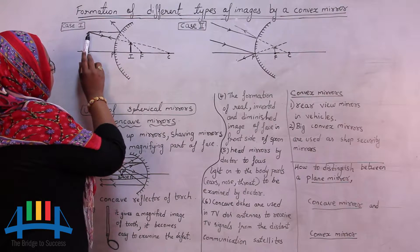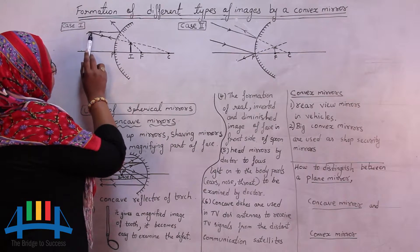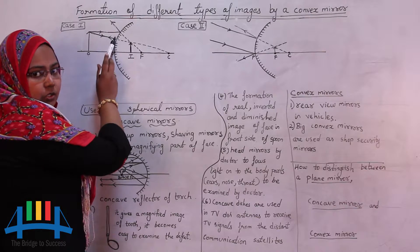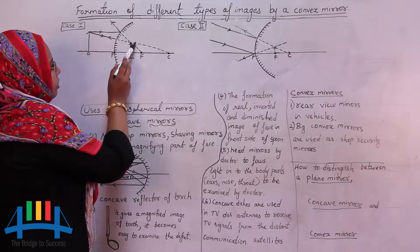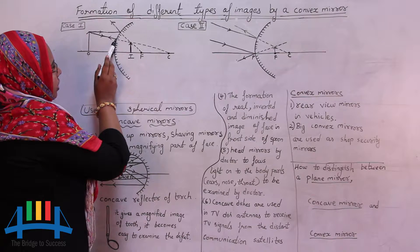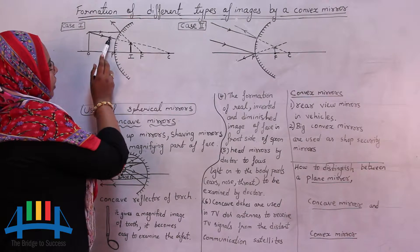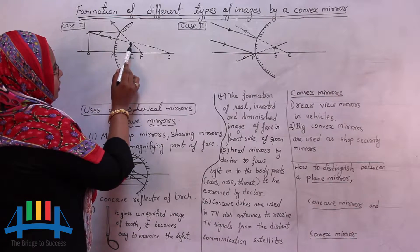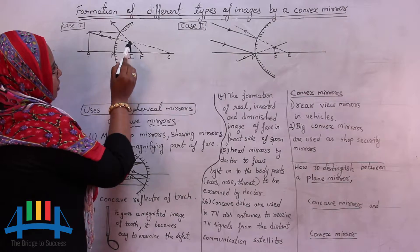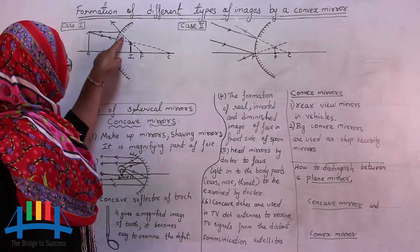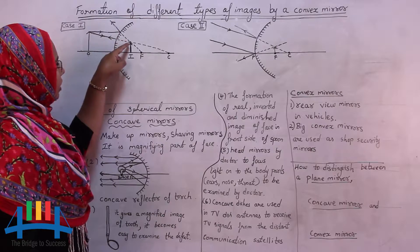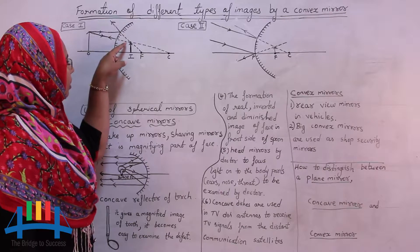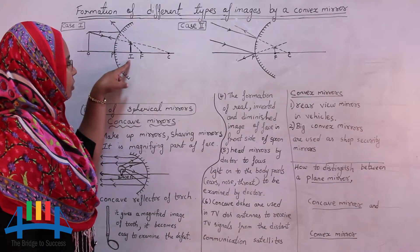For the second rule, when the ray appears to pass through the center of curvature — in the case of a convex mirror, it is not actually passing but appears to pass through the center of curvature — after touching the convex mirror, it gets reflected along the same path. The two dotted lines, which are the reflected rays extended backwards, meet at a point where the image is formed.